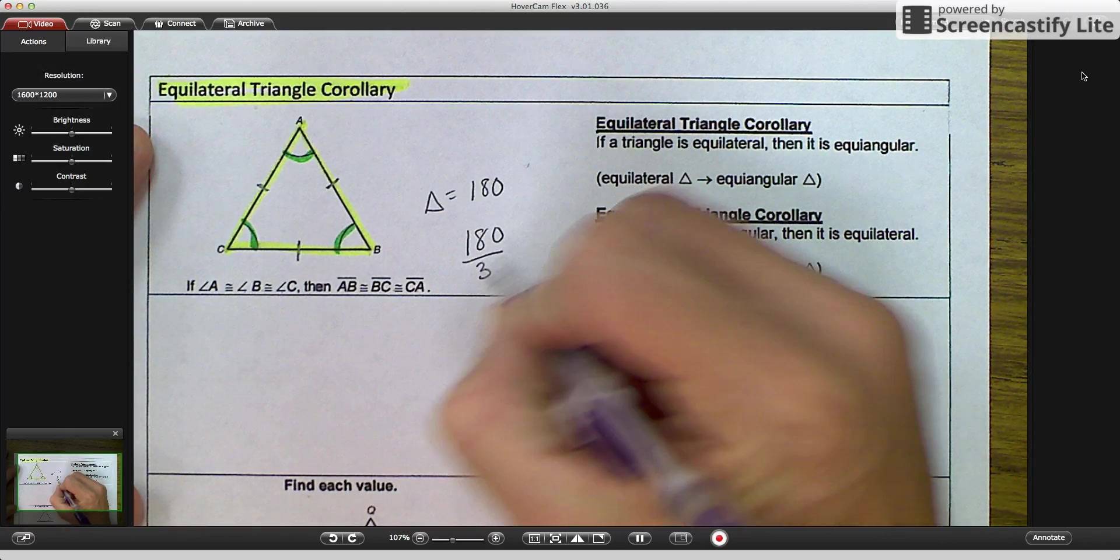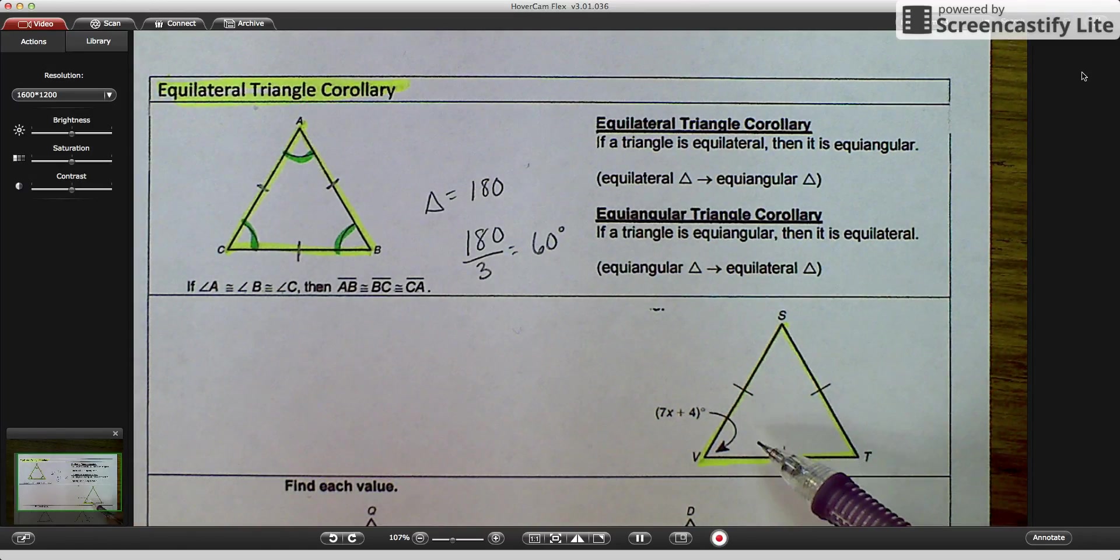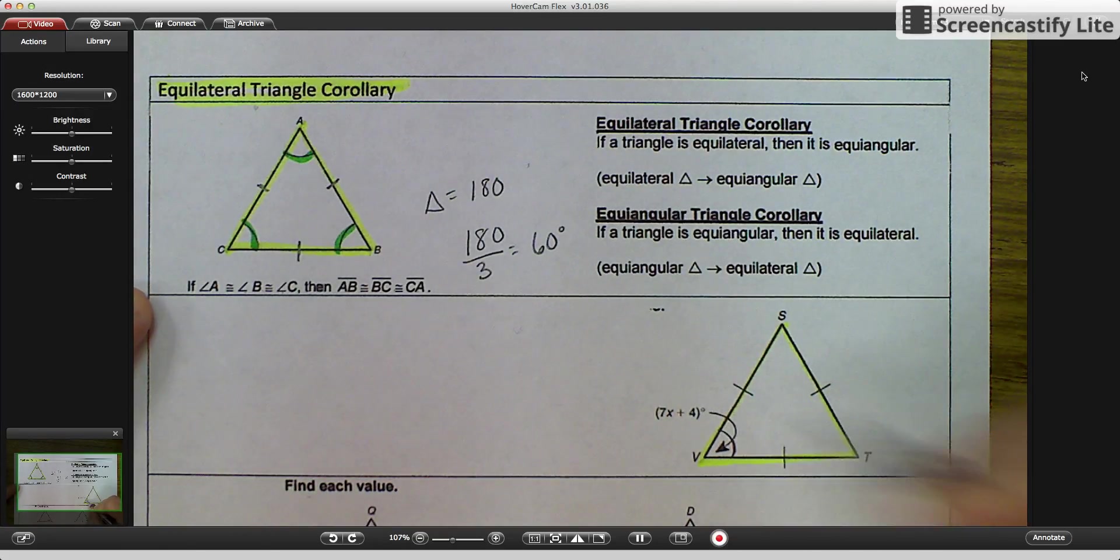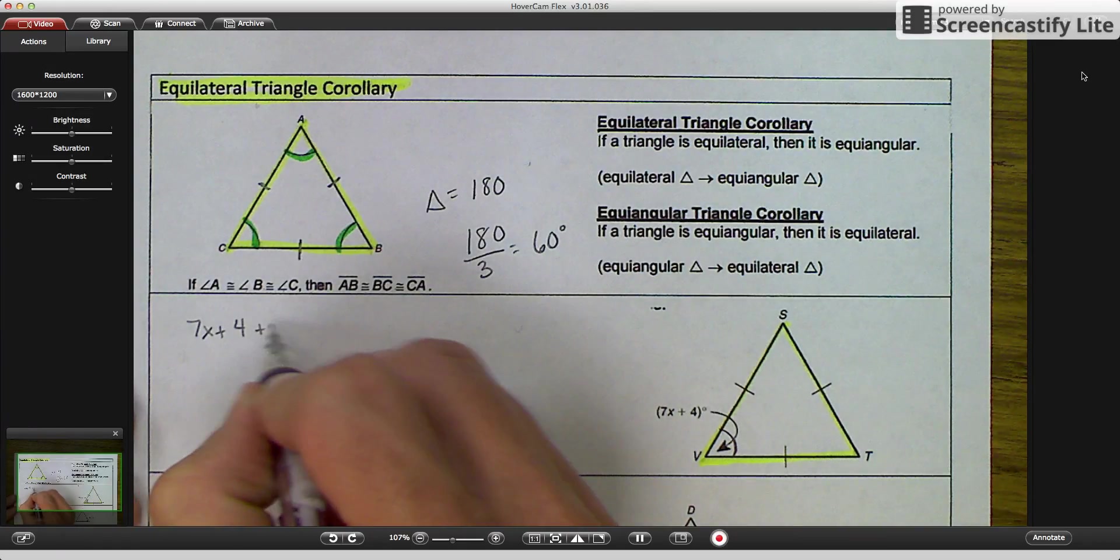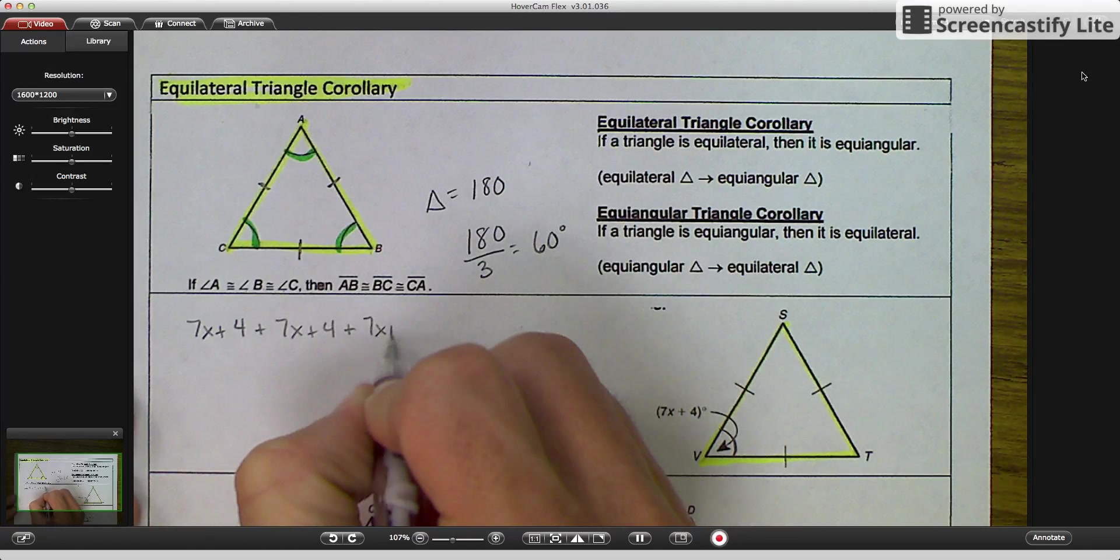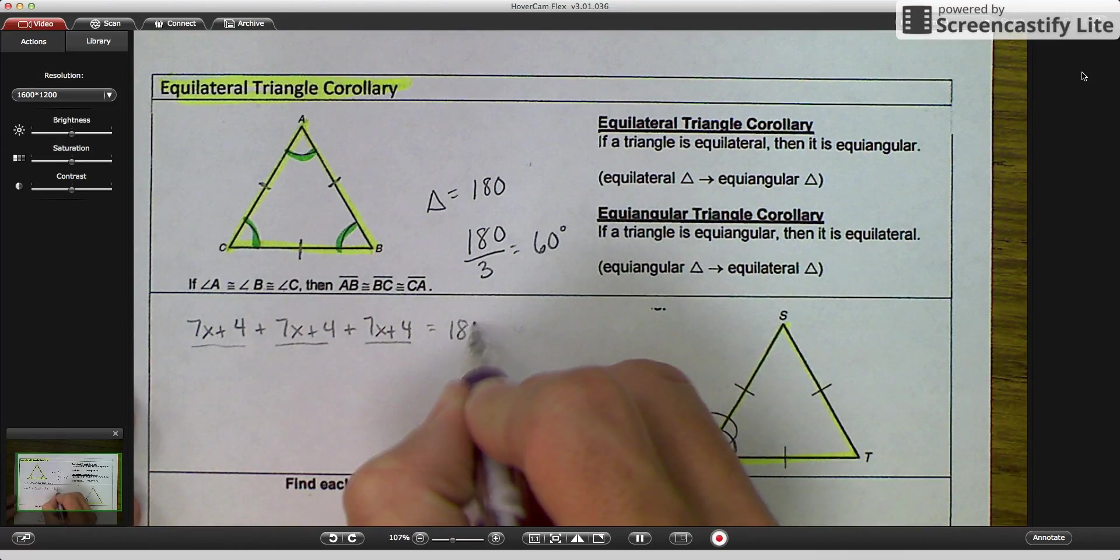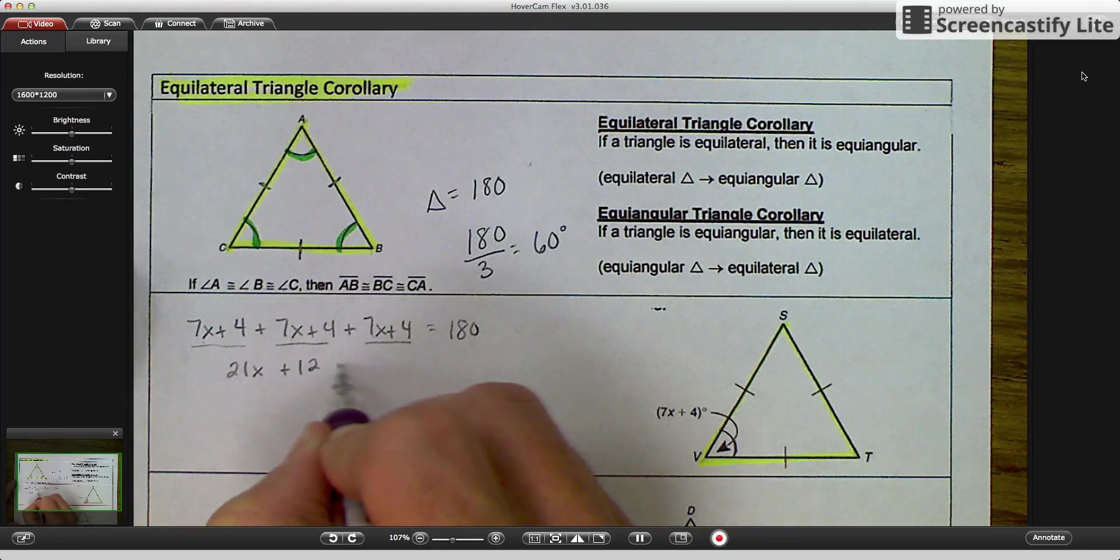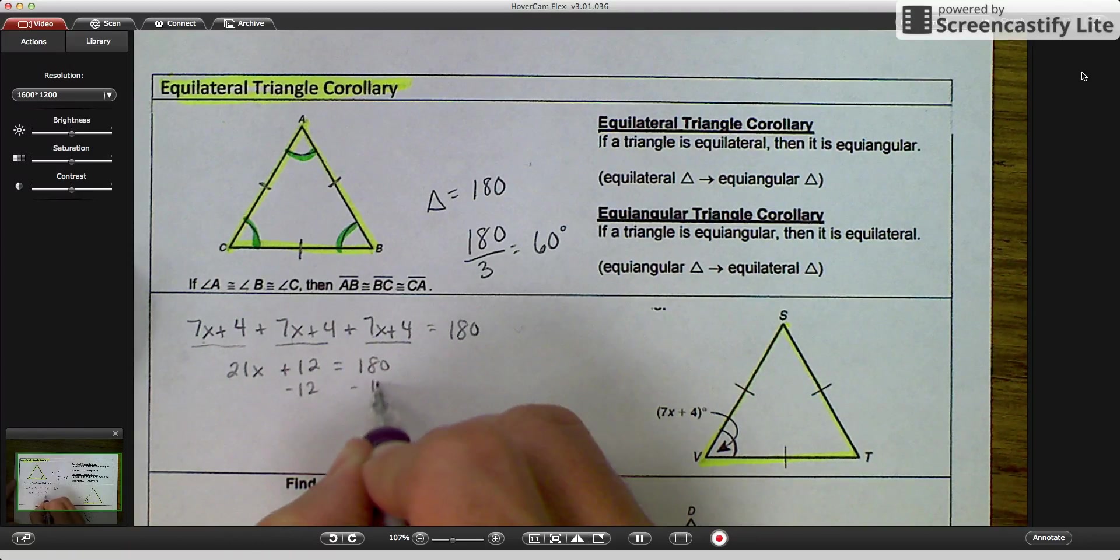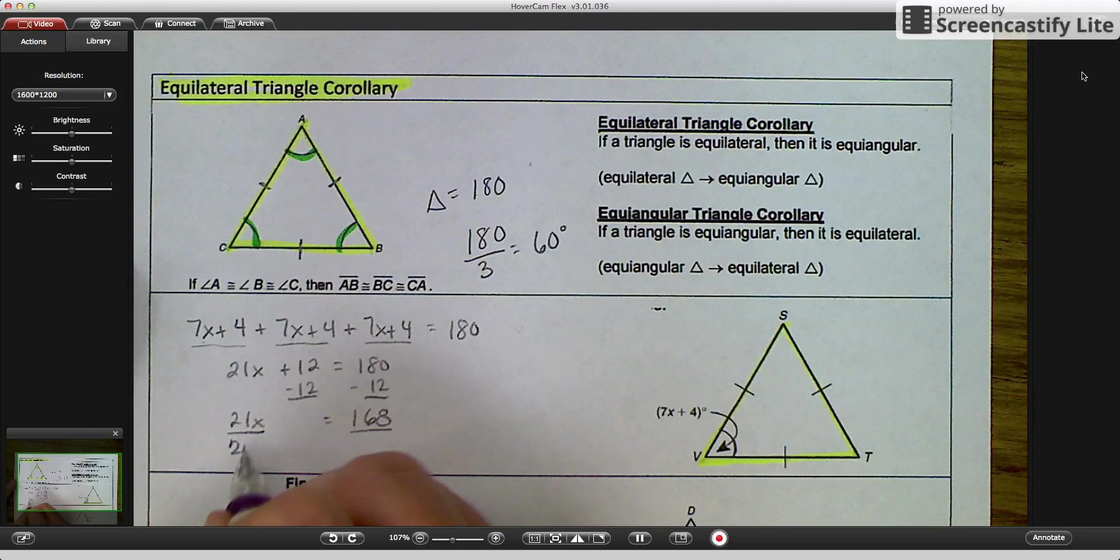if we did 180 divided by 3, that would mean that each angle always equals 60 degrees. So there are two ways that we can attack this problem, because this is telling us that this angle, angle V, is equal to 7x plus 4. So one way you could do it is you could go 7x plus 4, and you could add it to 7x plus 4, plus 7x plus 4, because those are the three angles. Angle 1, angle 2, angle 3, and that equals 180. And then you could solve this equation. 7 plus 7 plus 7, I would go 21x plus 12 is equal to 180. And then I would subtract 12, and I would get 21x is equal to 168. And then I would divide 168 by 21, and you get x equals 8.